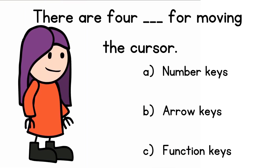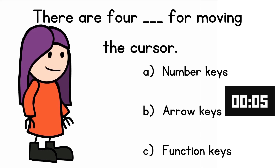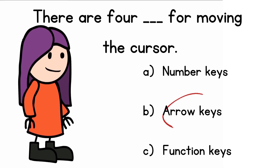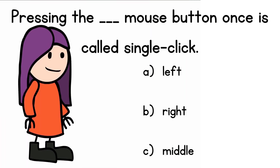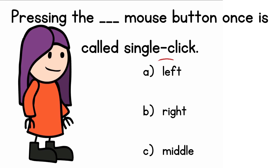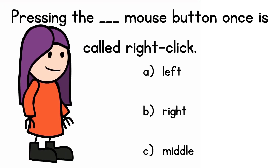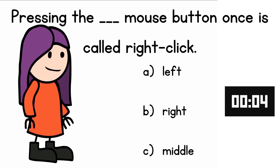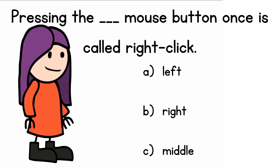There are four arrow keys for moving the cursor. The answer is arrow keys. Pressing the right mouse button once is called right click.